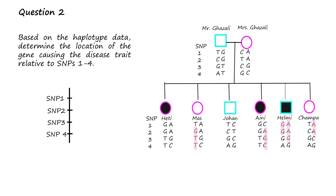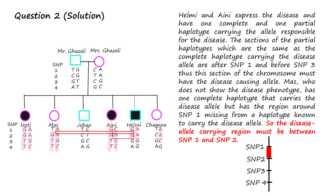Question 2: Based on the haplotype data, determine the location of the gene causing the disease trait relative to SNPs 1 to 4. To determine the solution, look at children with recombinant haplotypes. Helmy and Aini expressed the disease and inherited from their parents one complete and one partial haplotype carrying the allele responsible for the disease. The sections of the partial haplotypes which are the same as the complete parental haplotype carrying the disease allele are after SNP 1 and before SNP 3. Thus, this section of the chromosome must contain the disease-causing allele. Mars, who does not show the disease phenotype, has one complete haplotype carrying the disease-causing allele, but has the region around SNP 1 missing from a parental haplotype known to carry the disease allele. So the disease allele-carrying region must be between SNP 1 and SNP 2.